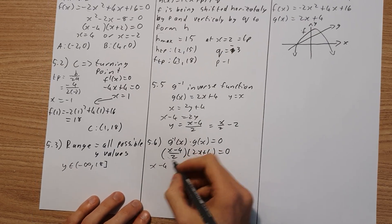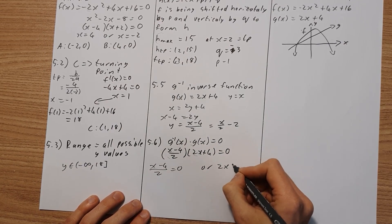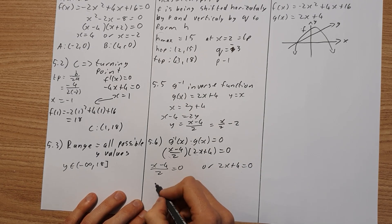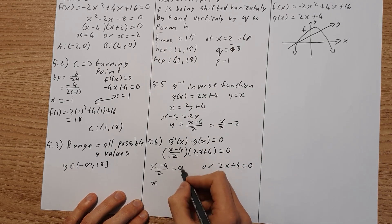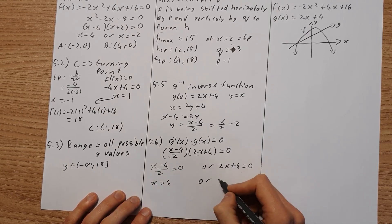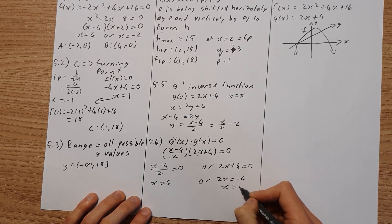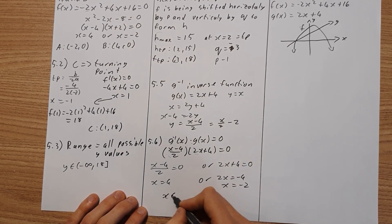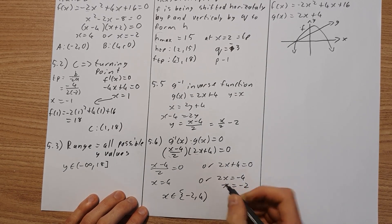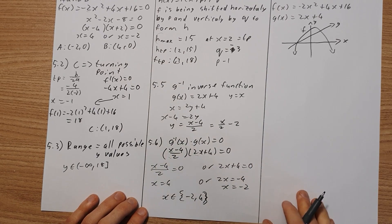So we can say x minus 4 all over 2 must equal 0, or 2x plus 4 must equal 0. So if we solve the first one here, we're going to have x equal to, times that across, that's 0, so x equals 4. And if we sort out the second one, that's 2x equals minus 4, so x equals negative 2. So therefore, for x, which is an element of the following set of numbers, negative 2 and 4, then this expression will hold true.